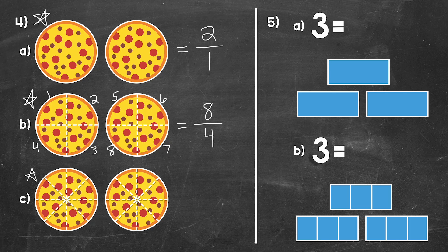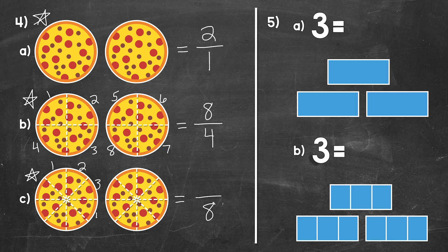Now let's take a look at C. We still have two pizzas here, but these pizzas are divided into eighths — eight equal parts. So we're going to write a fraction equal to two using eighths. Since these pizzas are divided into eight equal parts, eight is our denominator. Now we need to see how many eighths make up those two pizzas — in other words, how many pieces of pizza.